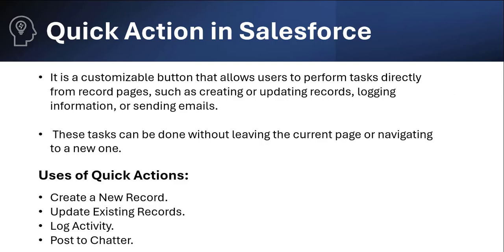For example, let's say you are creating an account record and immediately you get a requirement to create an opportunity related to that account. In this situation, if you have created a quick action, then without leaving the account record page you can create the opportunity record.